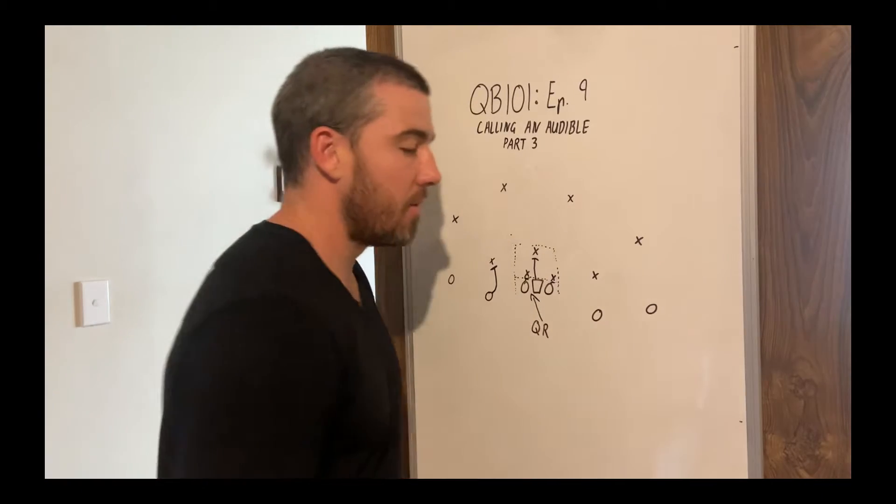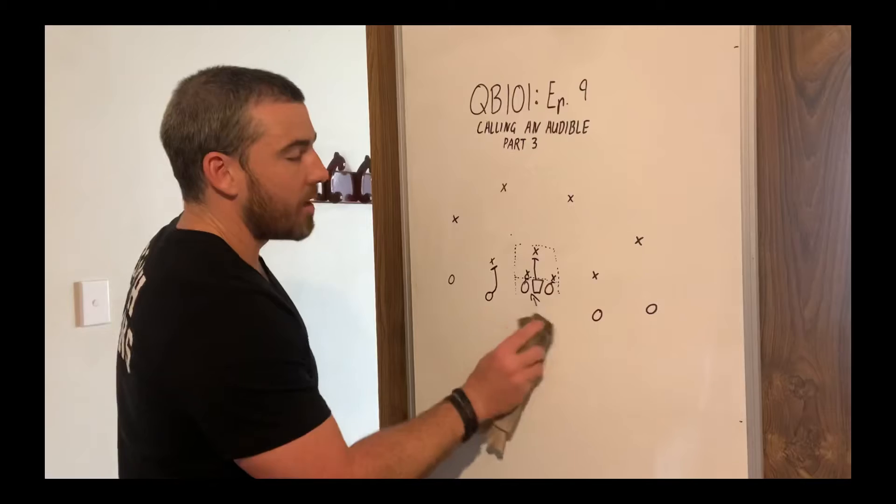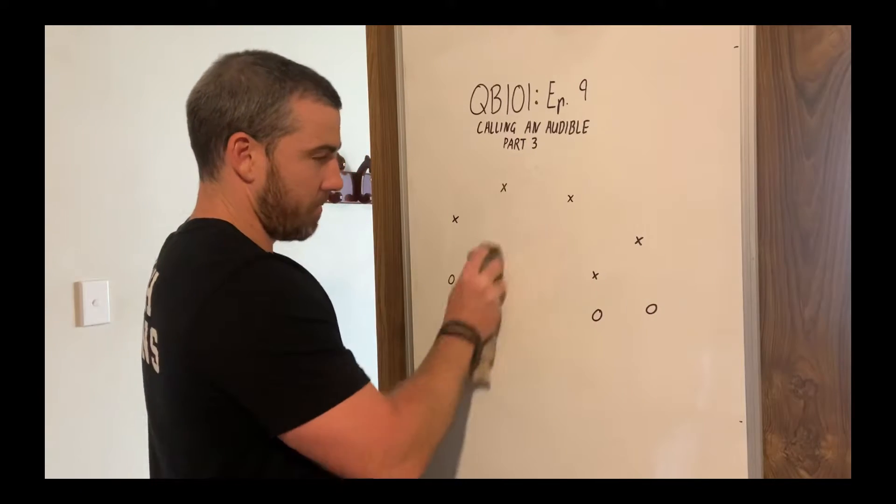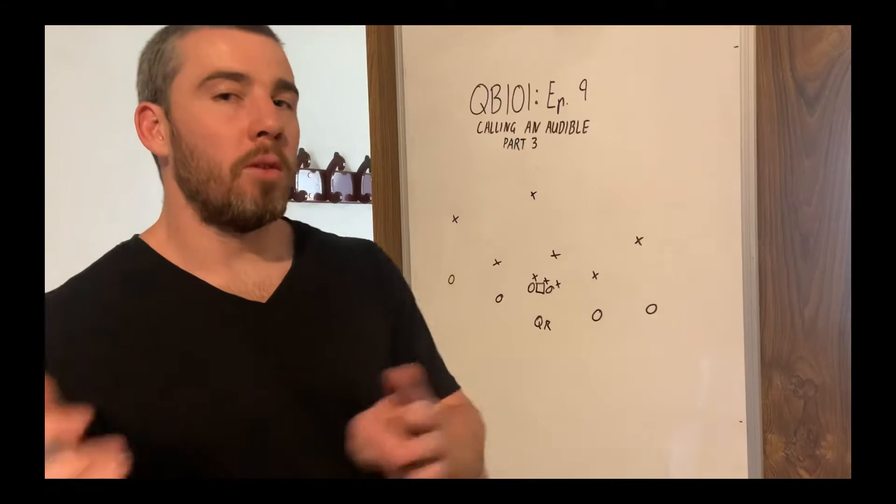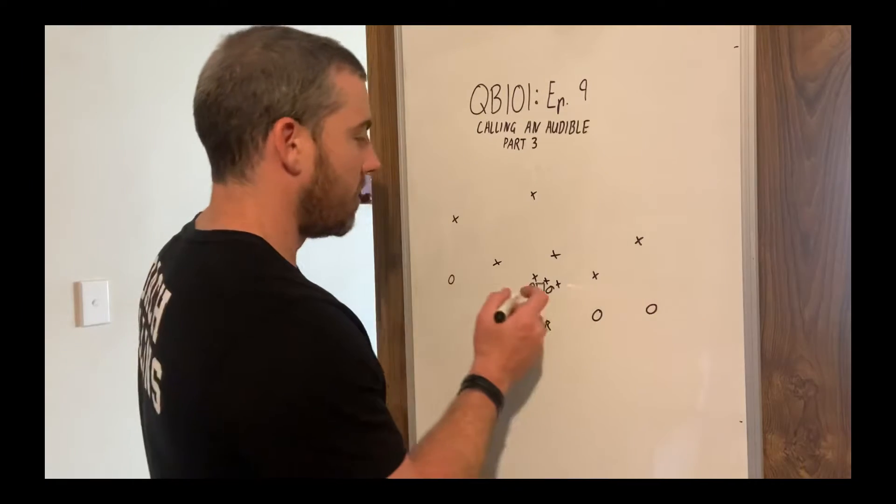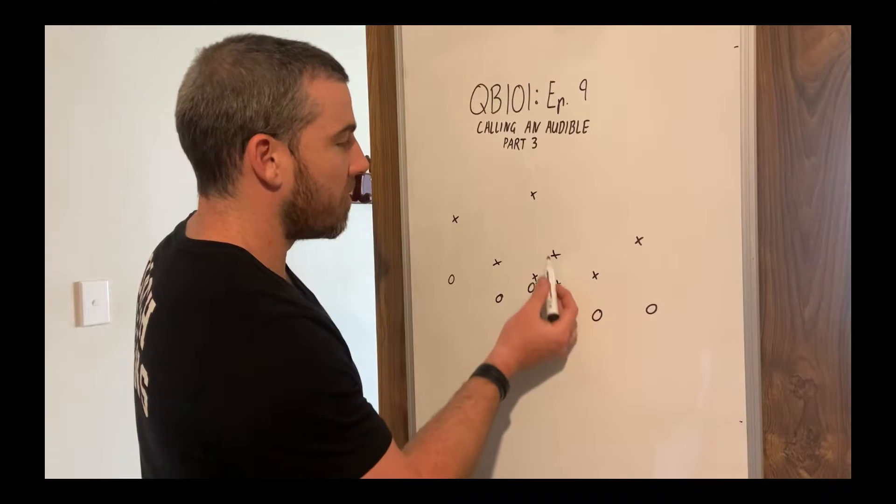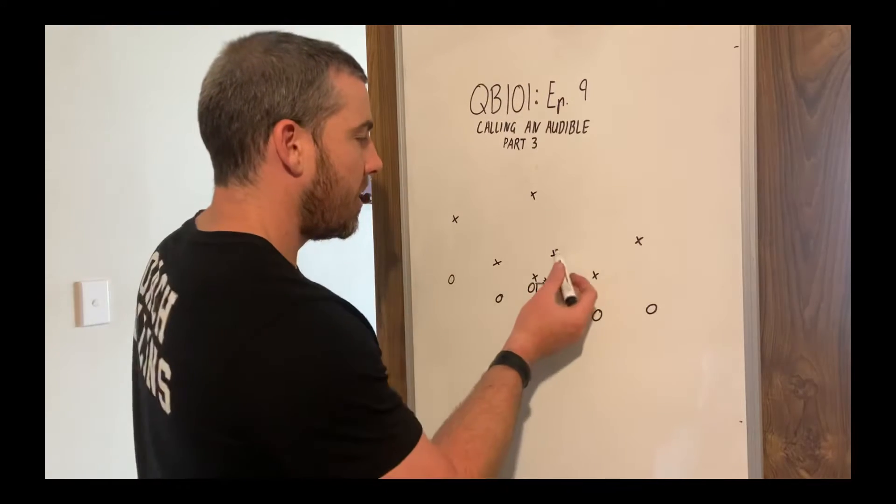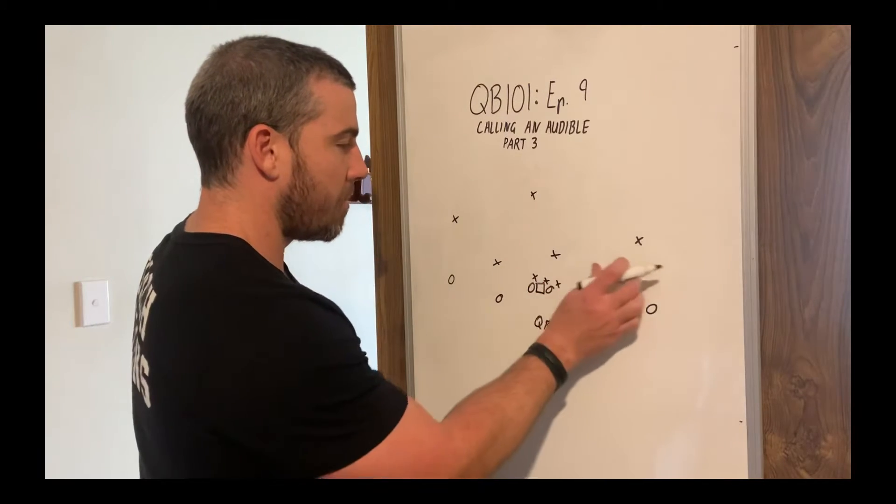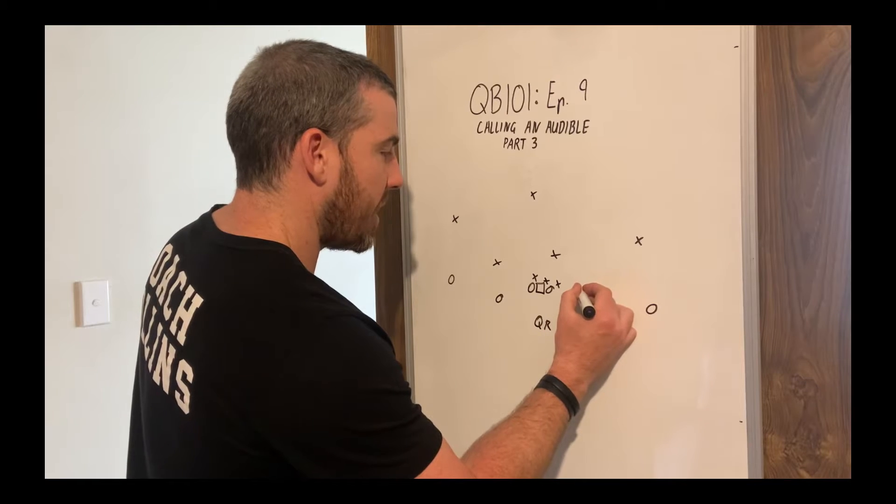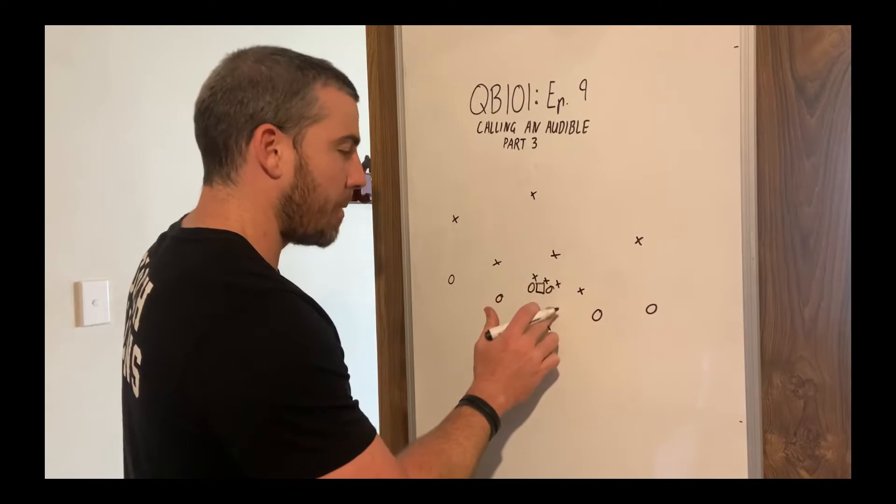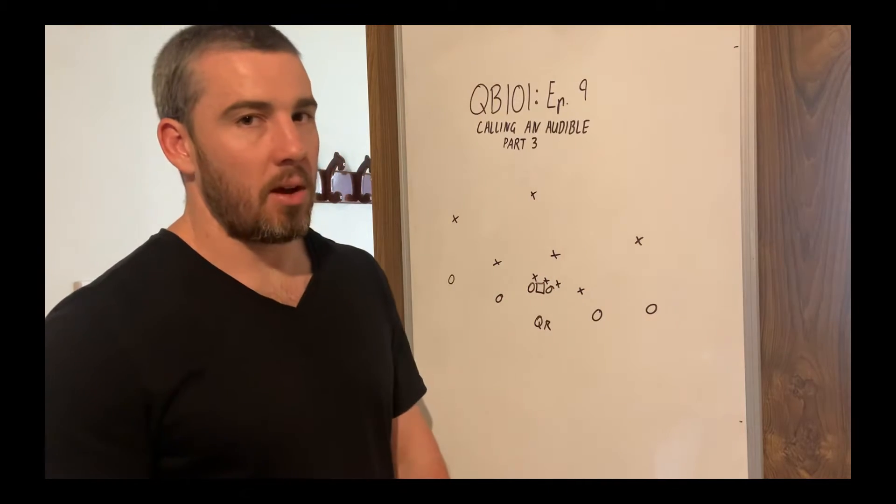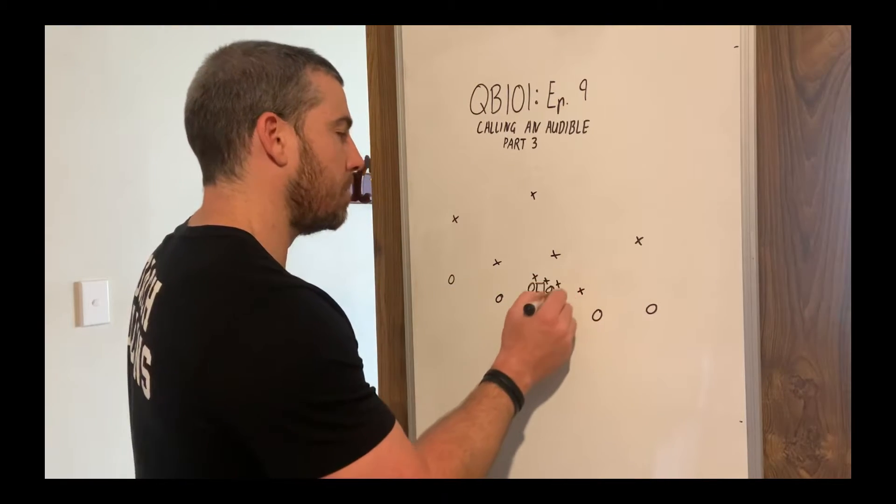So this is checking into a run play, checking into the dive. The next problem that we might see, which is slightly different, right here, this is what I call an overload to one side. So they've got a lot of players over here. If we want to run the ball and they got this kind of overload, they might even bring this player down, hang out over here, it looks like there's a lot of pressure coming from this right side. It looks like there's some blitzers coming.